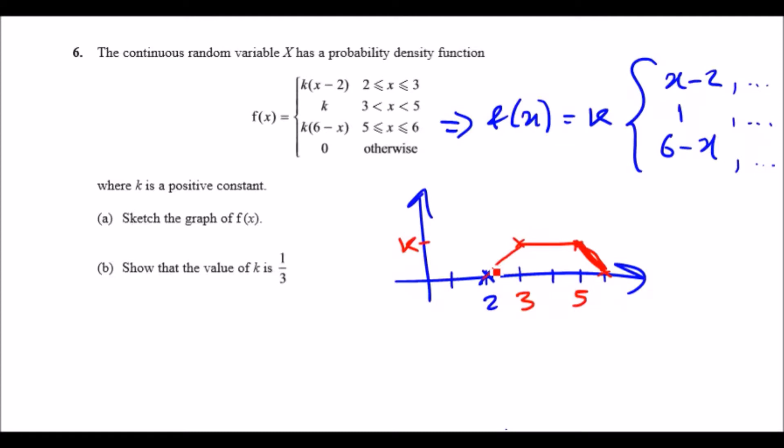For part b, show that the value k is a third. One thing to know about these kind of shapes is that the area underneath the curve or the line is always going to have a total area of 1. Just look at the shape: this is just a nice little trapezium.